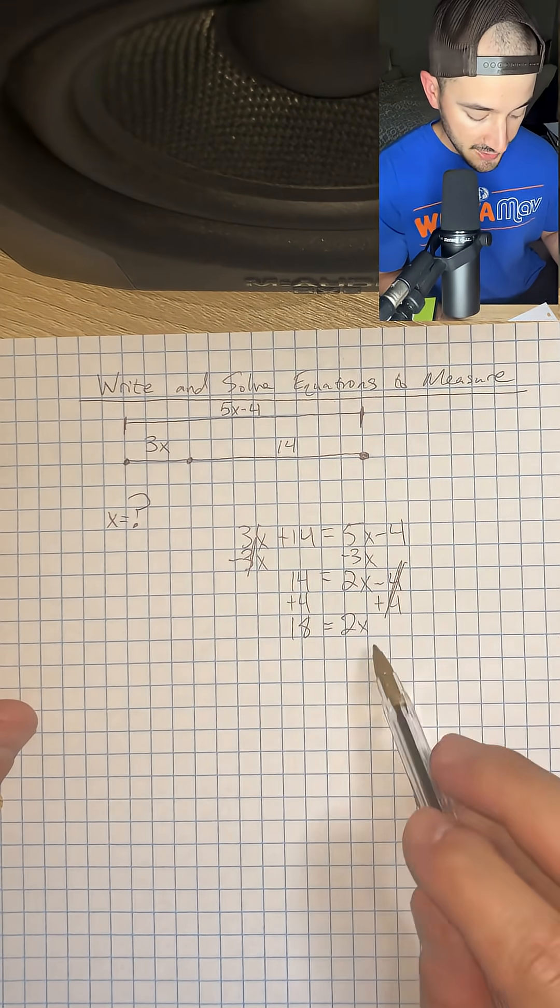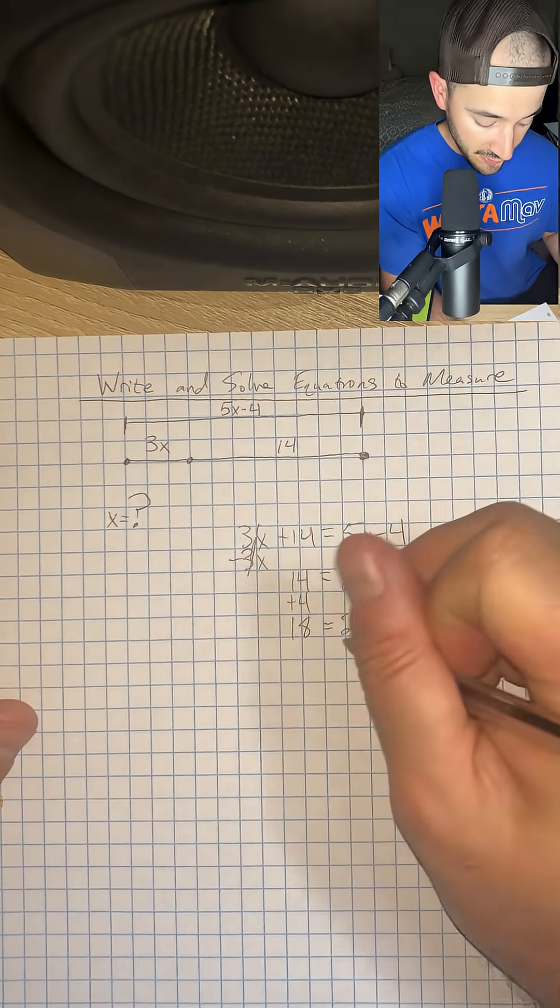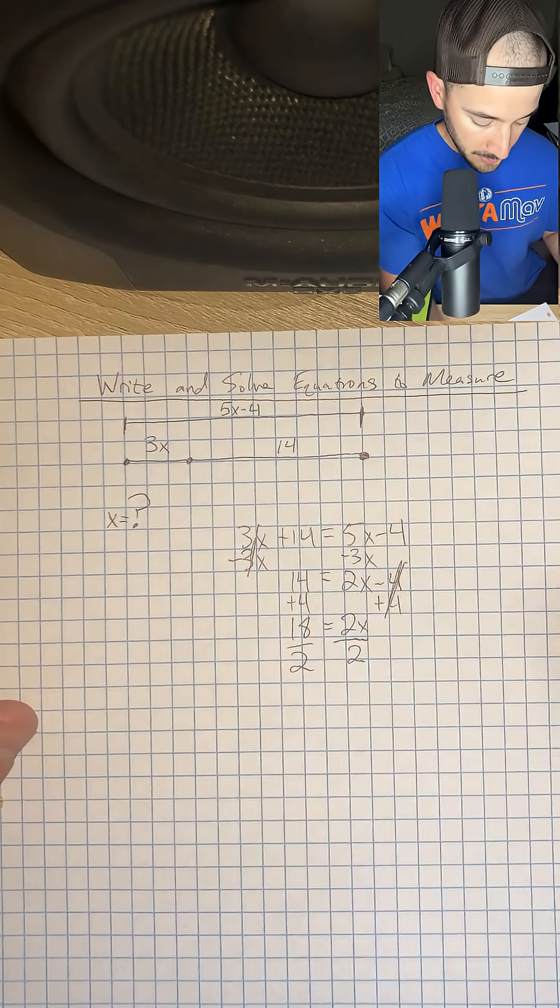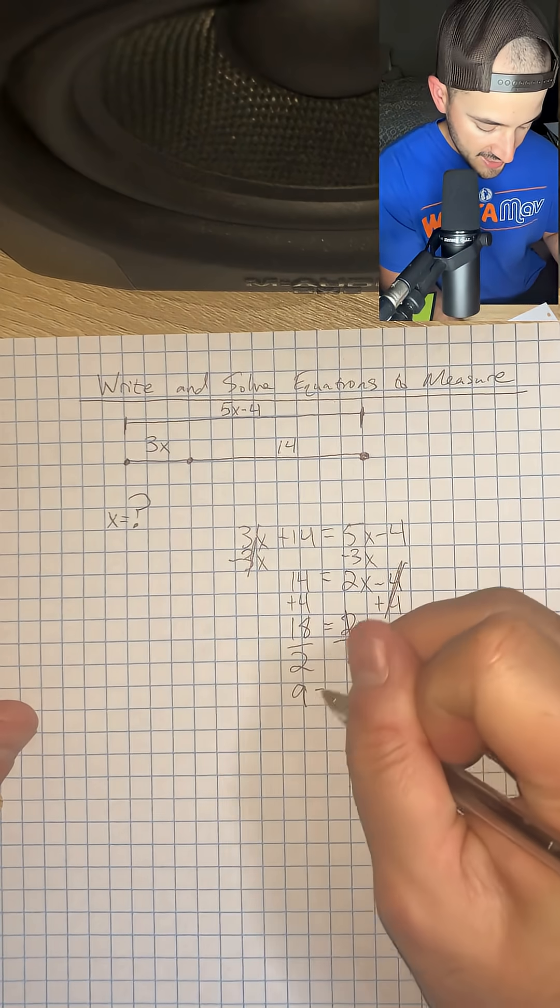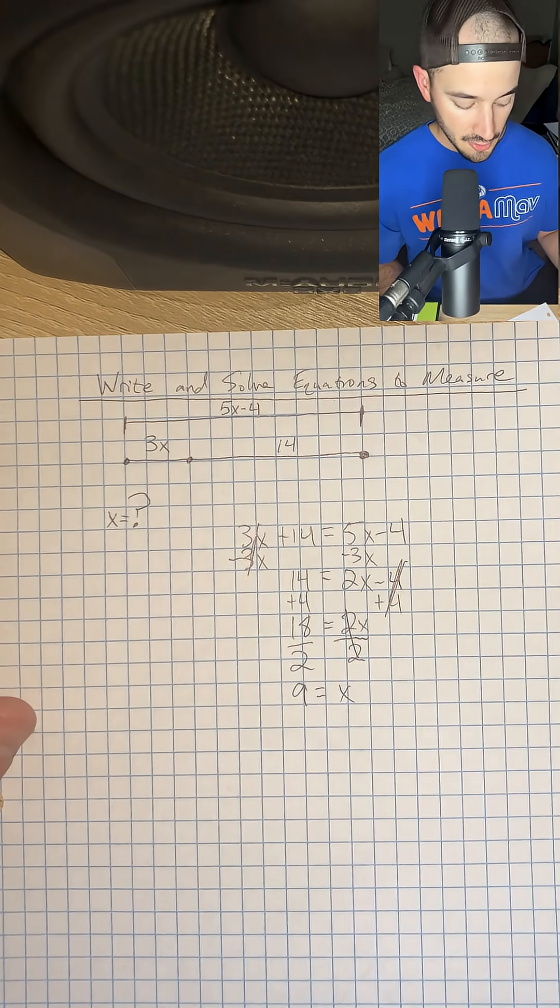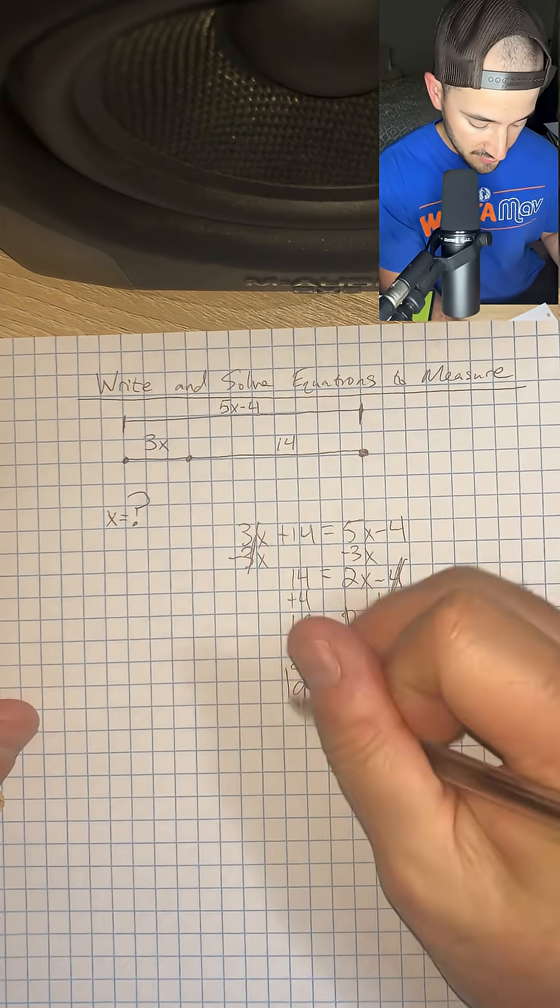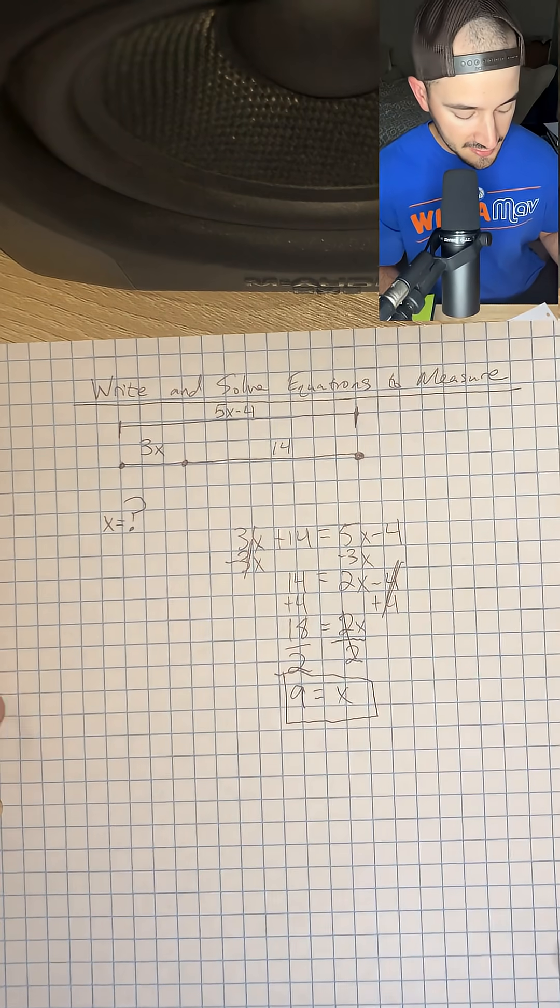And now we want to get x by itself, so we're going to divide by 2 on both sides to get 18 divided by 2, which is 9, is equal to x. So x would be equal to positive 9, and that would be our answer.